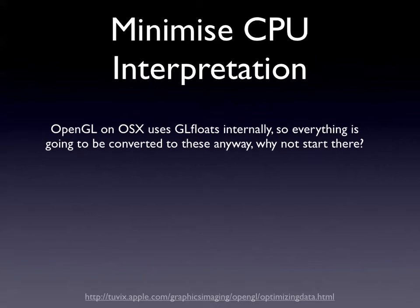Also, minimize CPU interpretation. OpenGL on OSX uses GL floats internally. Unless you're explicitly specifying otherwise with a buffer object, don't use some other format — don't use an integer for all your coordinates. Use a GL float. Because regardless, it's going to have to convert it on the CPU before it pushes it off to the GPU.